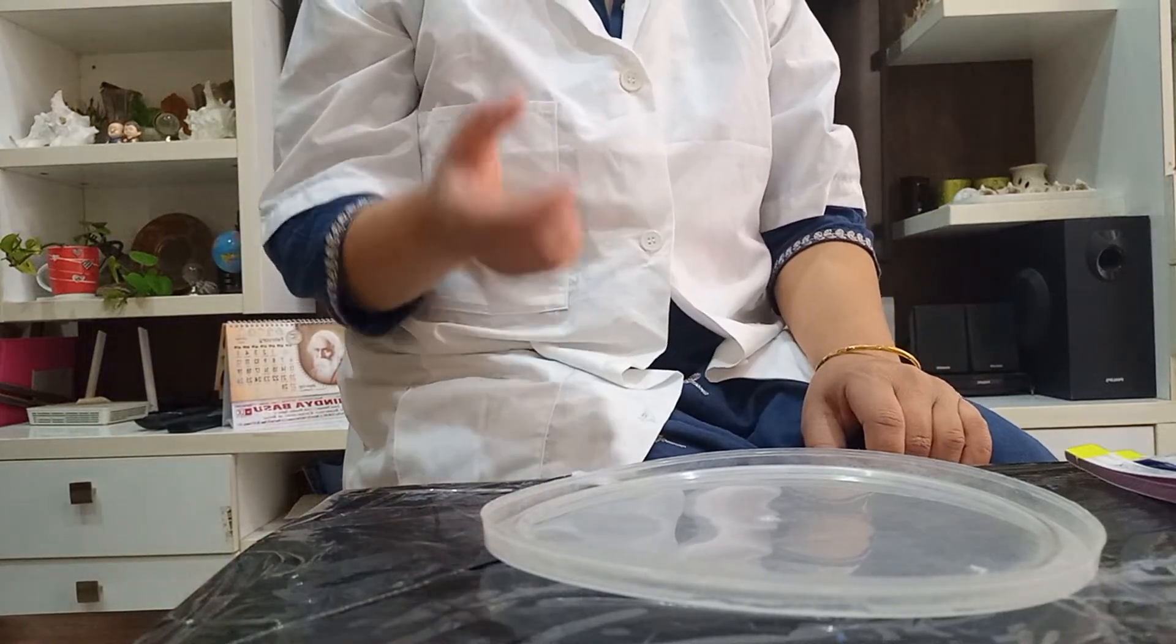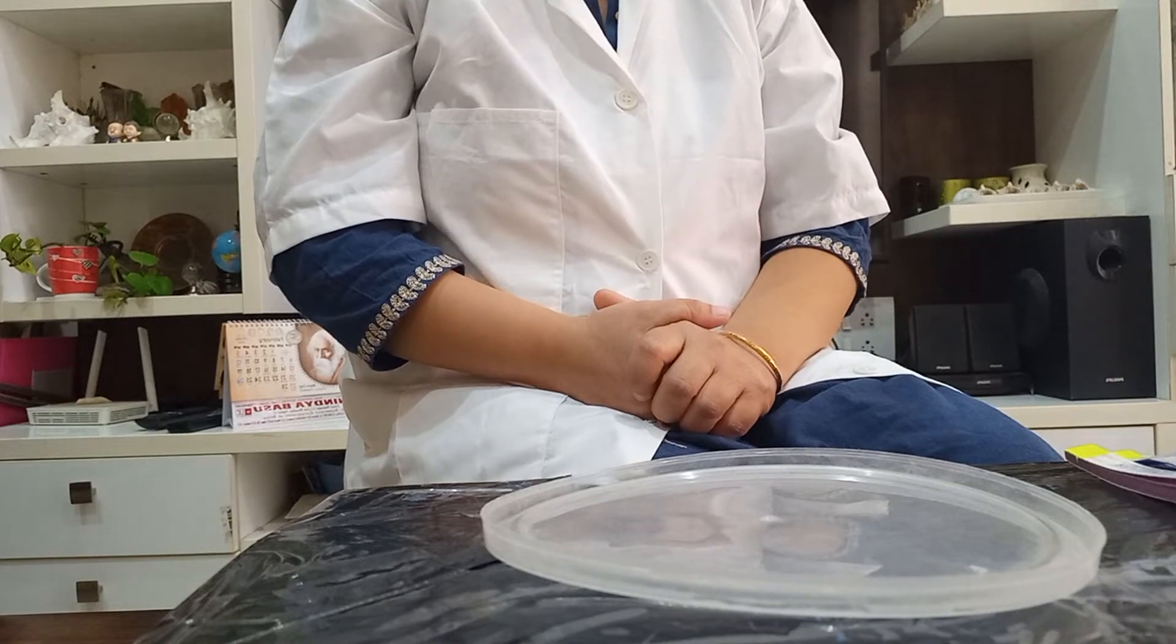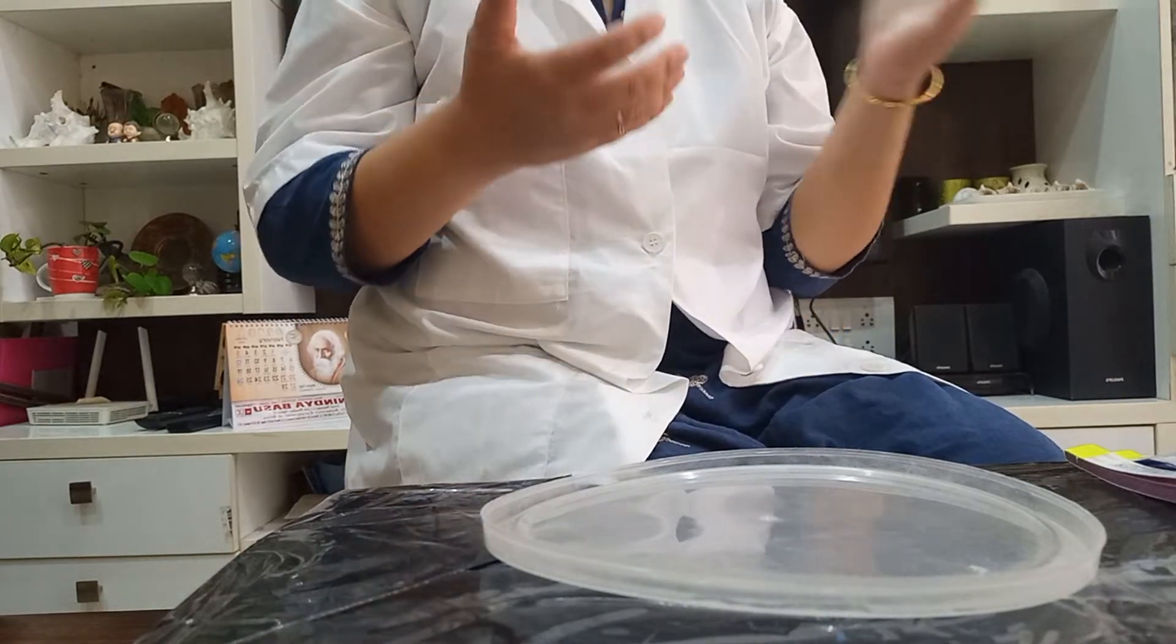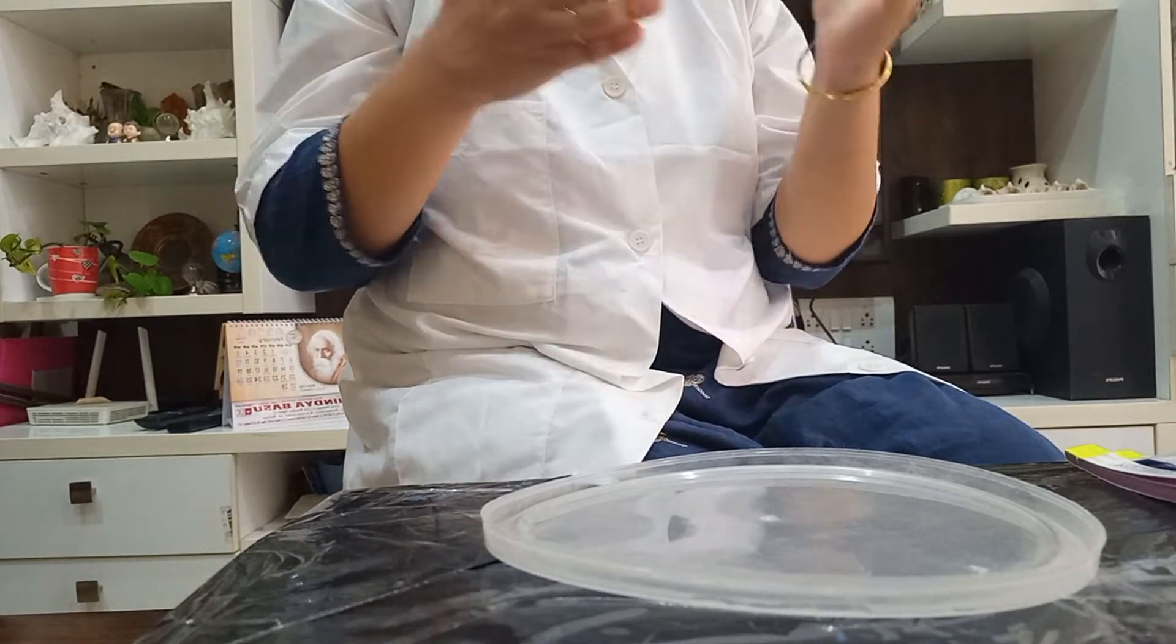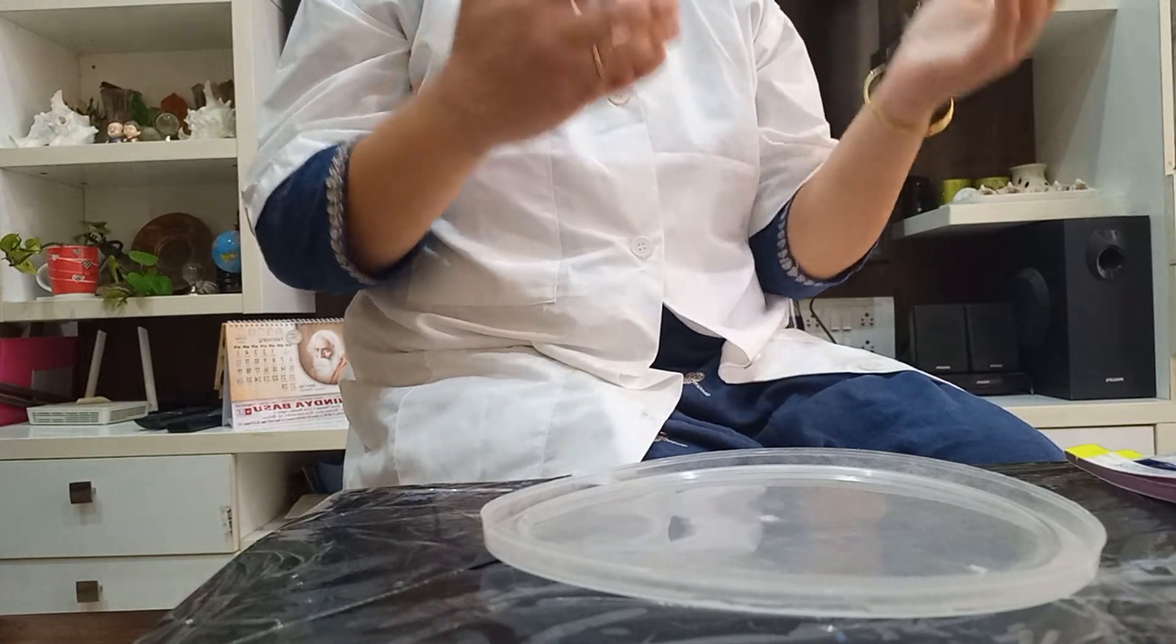Now, I am going to show you a simple experiment from the acid and base chapter. You see from the Arrhenius theory that acid and base show only the acid and basic properties when they dissolve in water.